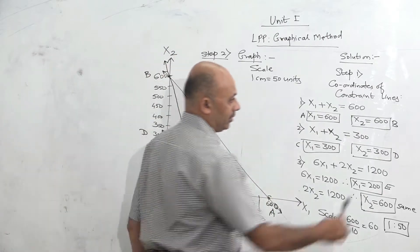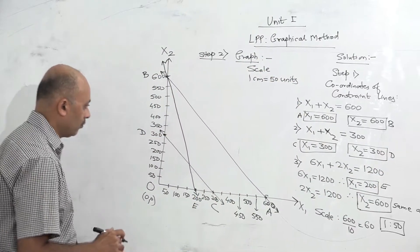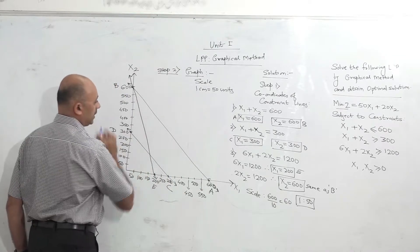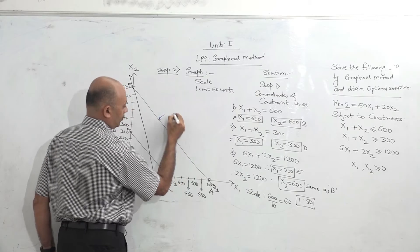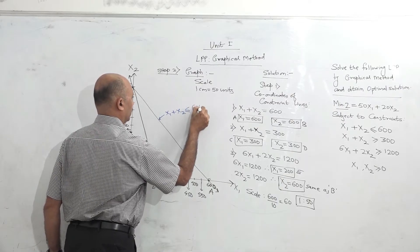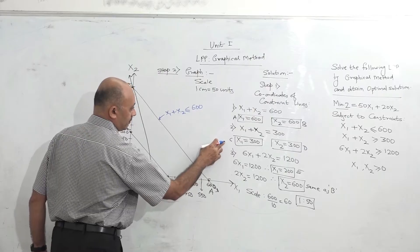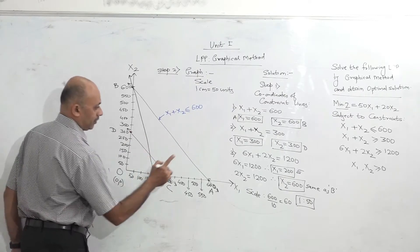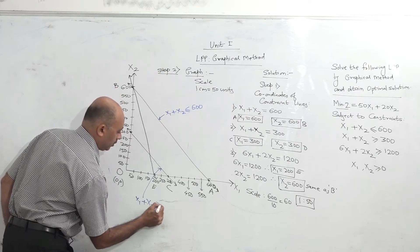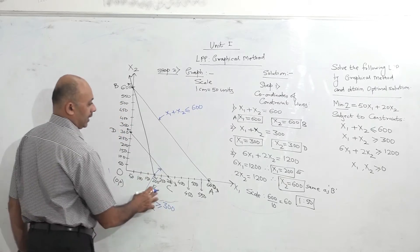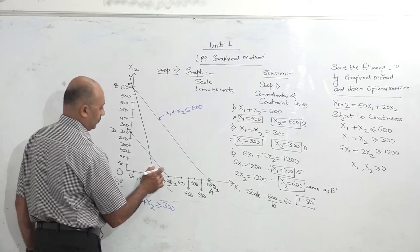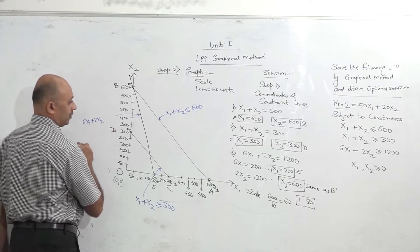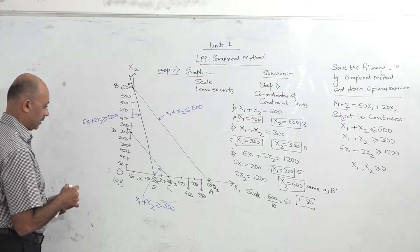Now three lines are complete — we have three constraints, so we have three lines on the graph. We write the equations of each line on the graph: line AB has equation x1 plus x2 less than or equal to 600; line CD has equation x1 plus x2 greater than or equal to 300; and line EB has equation 6x1 plus 2x2 greater than or equal to 1200.